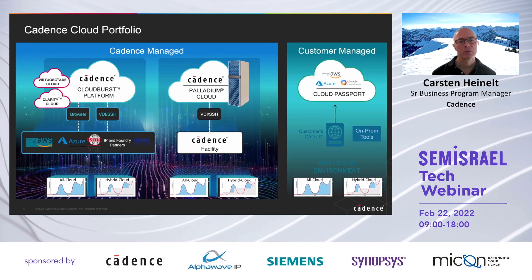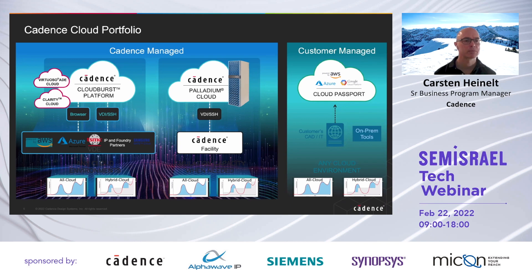The Cadence cloud portfolio is split between Cadence managed solutions and customer managed solutions. On the Cadence managed solutions side, we have the Cloud Burst platform, which comes in two flavors with a browser-based platform and a virtual display interface or desktop interface. With solutions like OpenText in this field, you also have the ADE Cloud, which is a hybrid model, and Clarity Cloud, which is also a hybrid model.